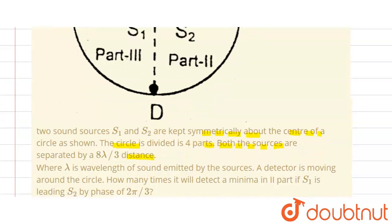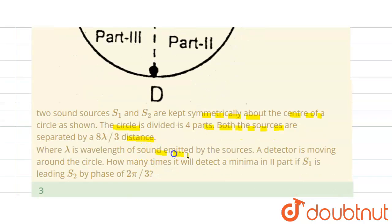Where lambda is the wavelength of sound emitted by the sources. A detector is moving around the circle. How many times will it detect a minima in part two if S1 is leading S2 by phase 2π/3?